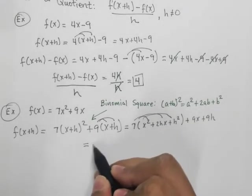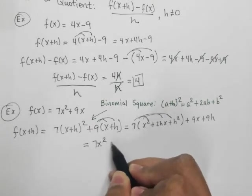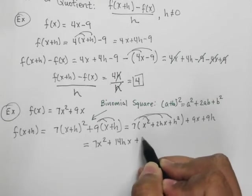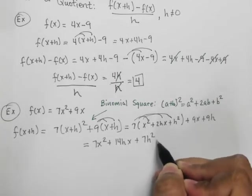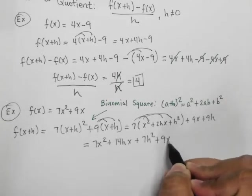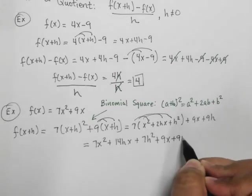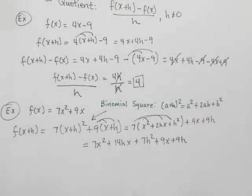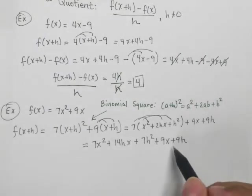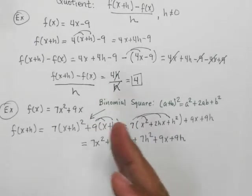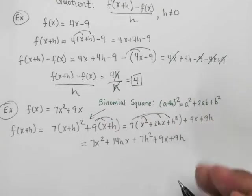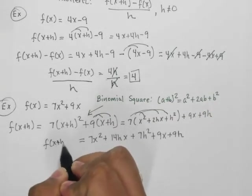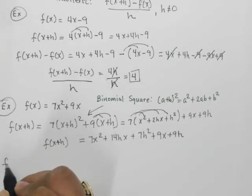I get 7x square plus 14hx plus 7h square plus 9x plus 9h. So it does not appear here that I can cancel or combine any like terms, because everything seems to be its own type of term. So we'll leave this as my f of x plus h.